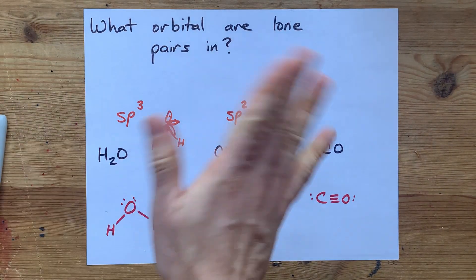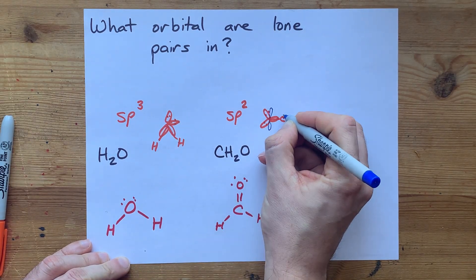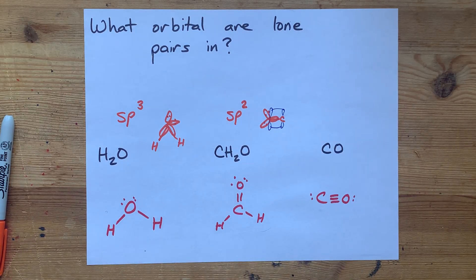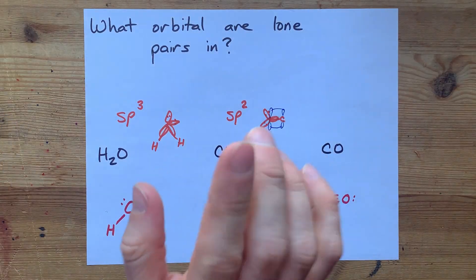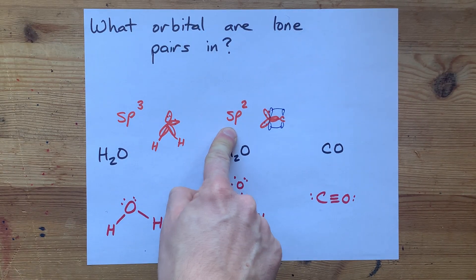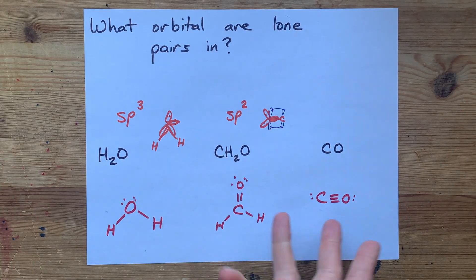And then, if you're curious, the unhybridized p orbital helps make a pi bond with the carbon that is also sp2 hybridized. But you're not here for that. You're here for what orbital the lone pairs are in. They're in the hybrid orbitals. So if the oxygen is sp2 hybridized, it's in an sp2 orbital.